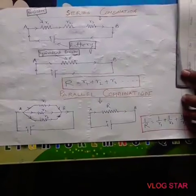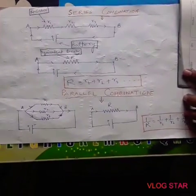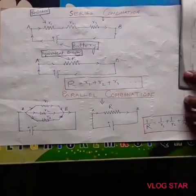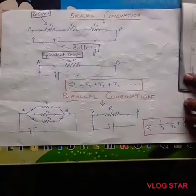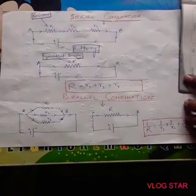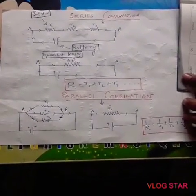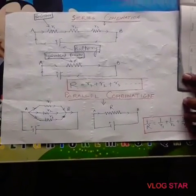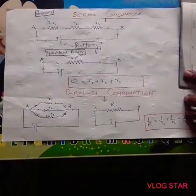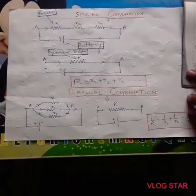Online physical science class for class 10. Today's topic is current electricity part 3, subtopic: series and parallel combination of resistors.